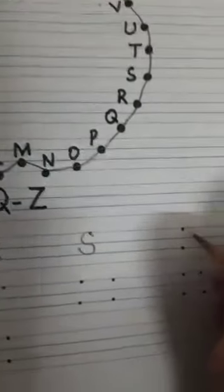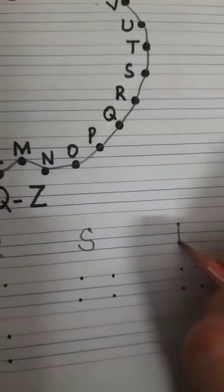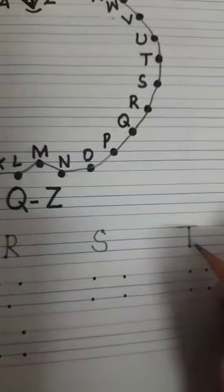S ke baad aata hai? T. What comes after S, children? It is T. Standing line. And one sleeping line. This is the formation of letter T.